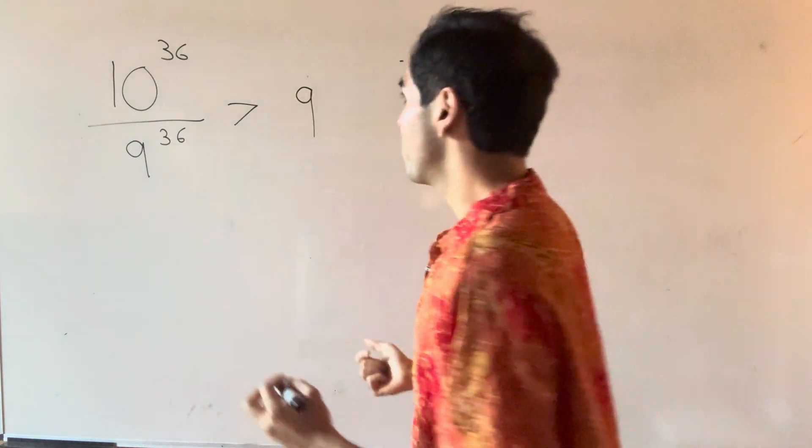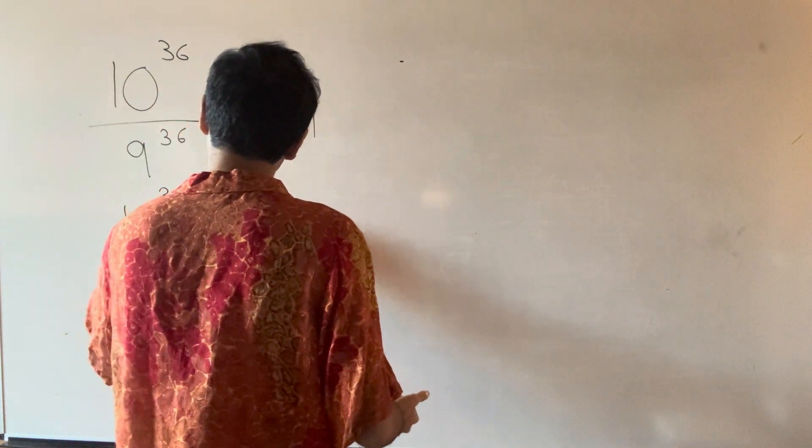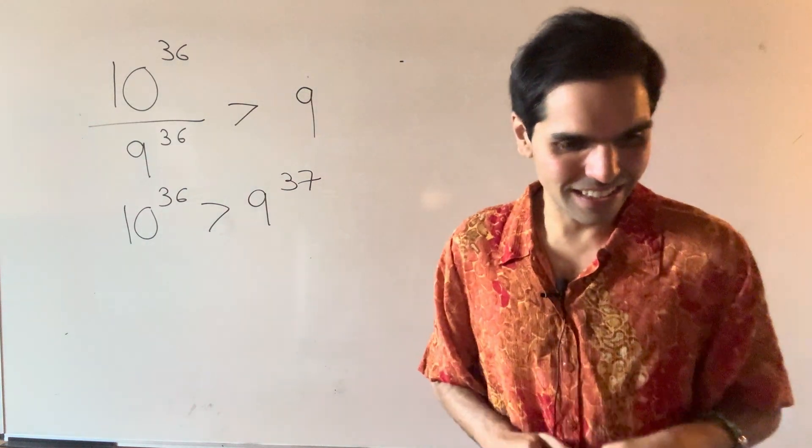And then just multiplying, we get 10^36 is greater than 9^37. So in the end, 10^36 wins.